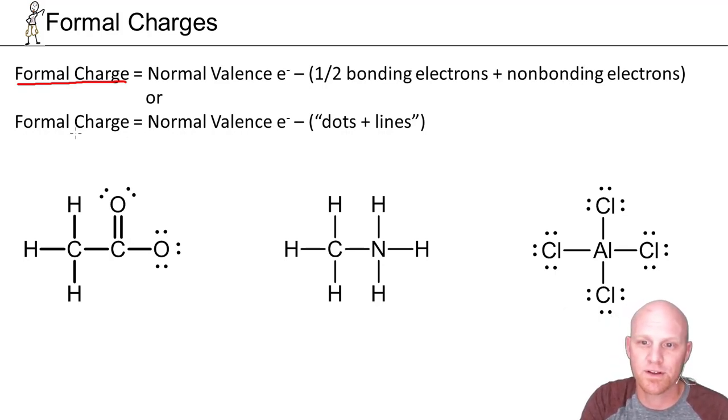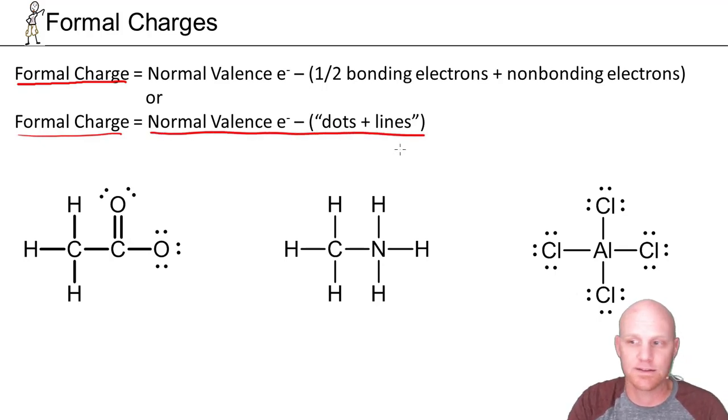The normal number of valence electrons minus half the bonding electrons as well as the non-bonding electrons. My personal favorite, though, is formal charge equals the normal valence electrons minus the dots and lines around it. The dots being the lone electrons or non-bonding electrons, and the lines being the bonds around it. Notice we're only going to count the bonds once as a single line, not counting the electrons there.